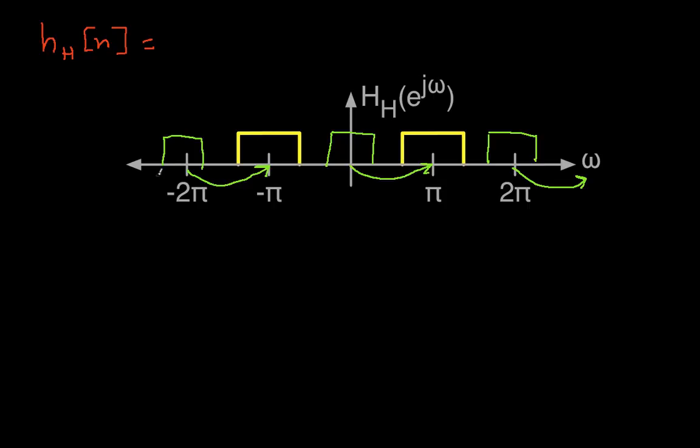So what I can say then is that the frequency response for the high-pass filter is the same as the frequency response for the low-pass filter, but now we're shifting to the right by pi. So this represents a shift to the right by pi in the frequency domain.